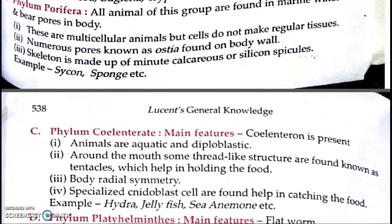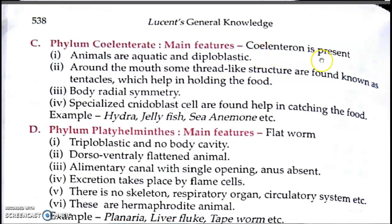Now come to phylum Coelenterata. Coelenteron means hollow, and enteron means intestine — so it refers to a hollow body cavity. Animals are aquatic and diploblastic, meaning their body is derived from two embryonic cell layers — ectoderm and endoderm. There is no role of mesoderm here.